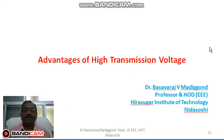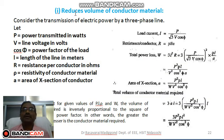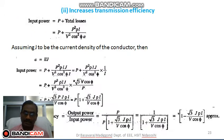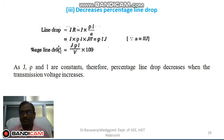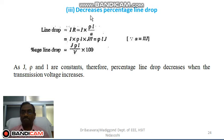We shall continue with the advantages of high voltage transmission. We have discussed the first advantage — it reduces the volume of conductor material — then it increases the efficiency of transmission. The third advantage is it decreases the percentage of line drop.